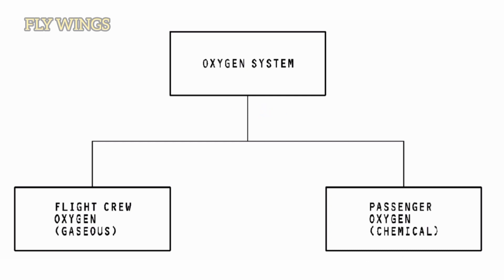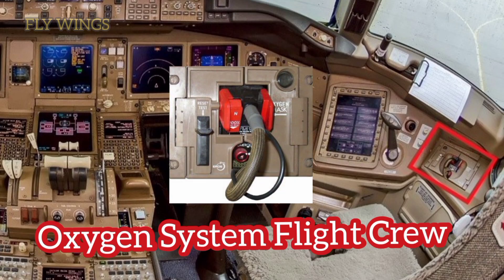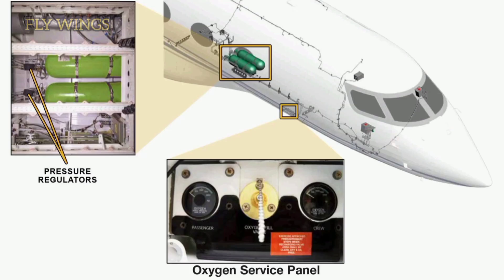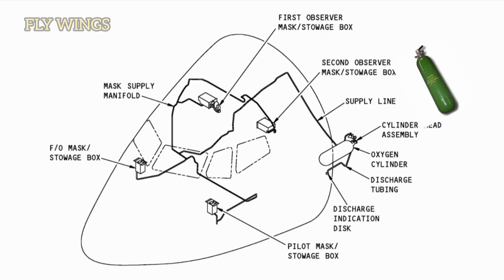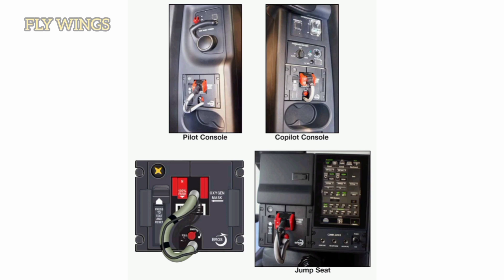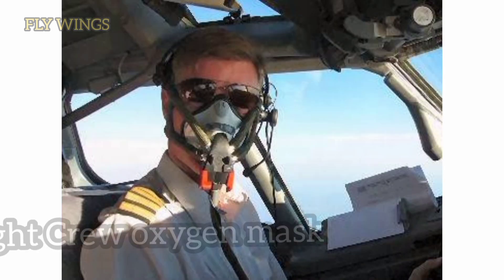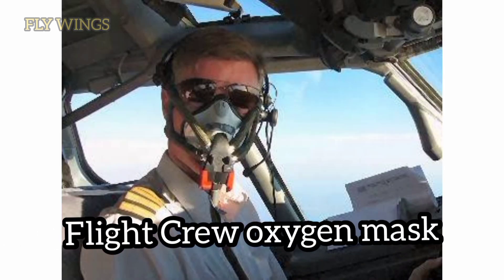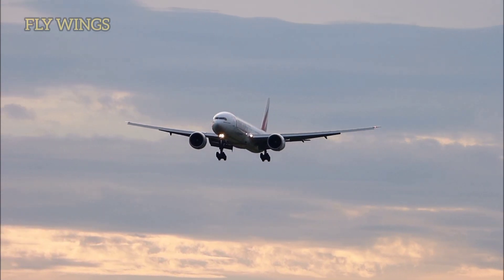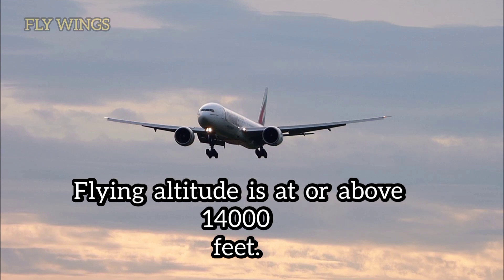Gaseous oxygen systems and chemical oxygen systems are used in the aircraft. The flight crew oxygen system operates independently — it is a high-pressure gaseous system. High-pressure gaseous oxygen is stored in a cylinder in the electronic equipment compartment. The manifold supplies oxygen to the flight crew oxygen masks.